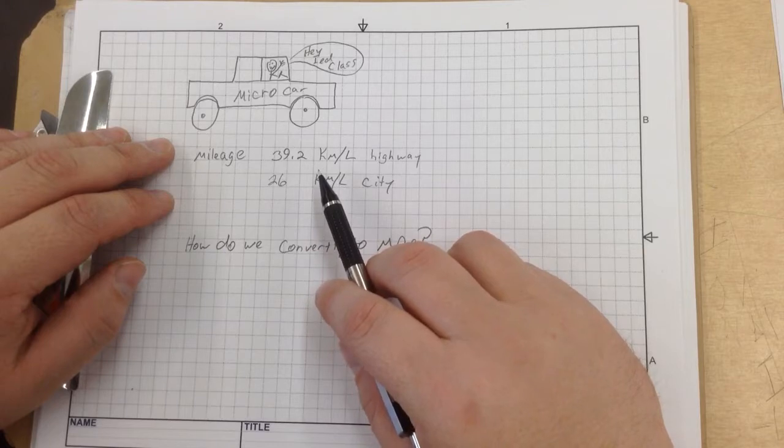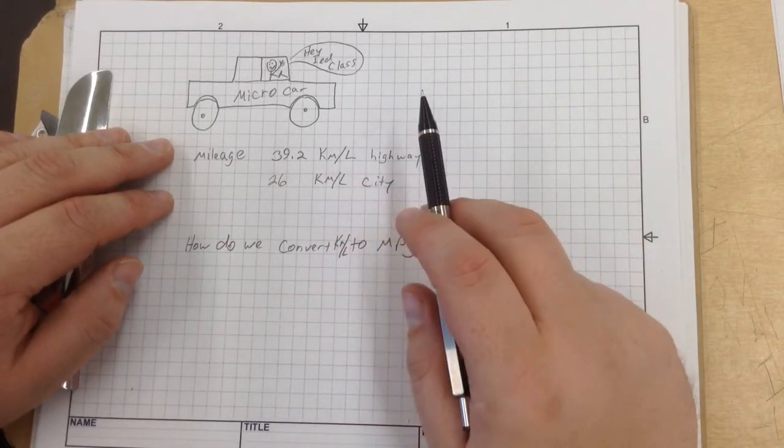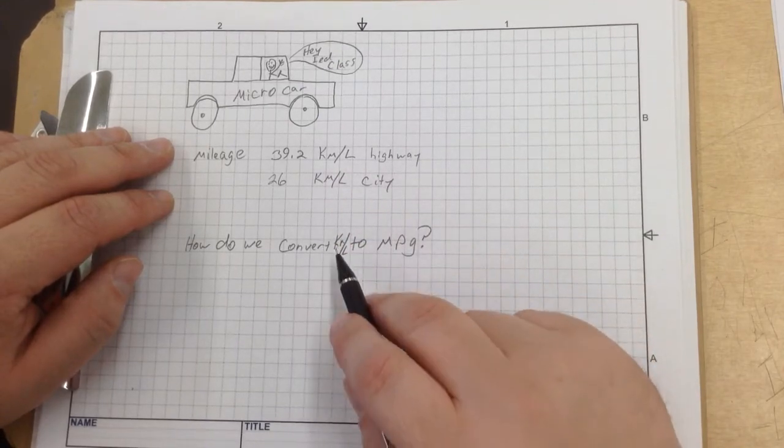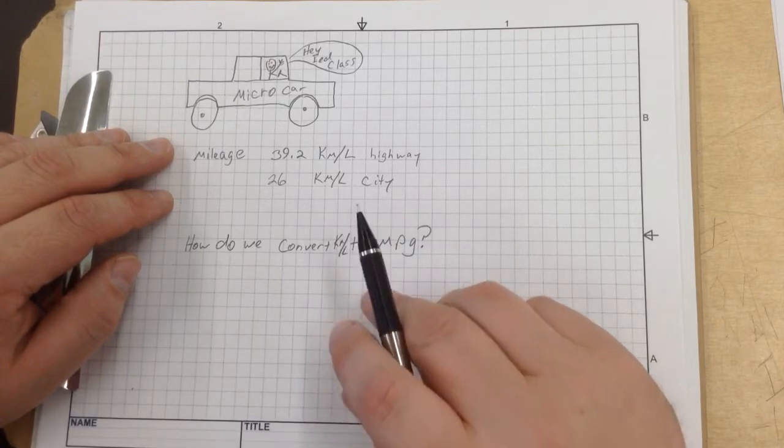In this problem, we have to figure out how to convert kilometers per liter to miles per gallon. This is going to involve some confusing math and you might get a little confused, so don't panic about this.